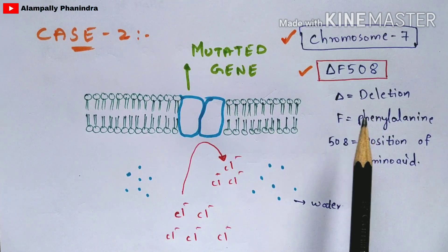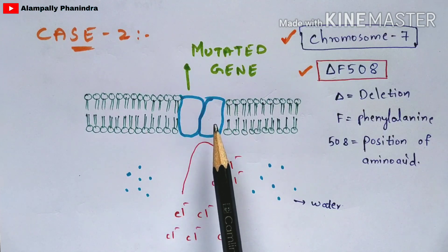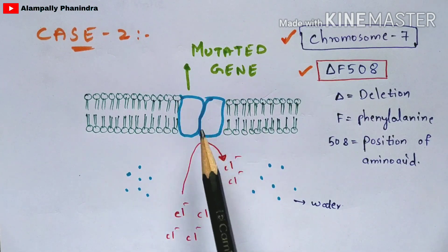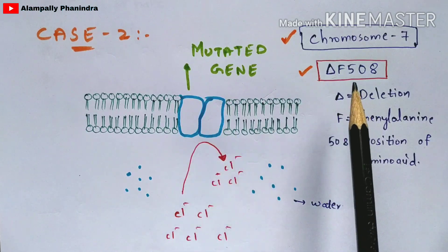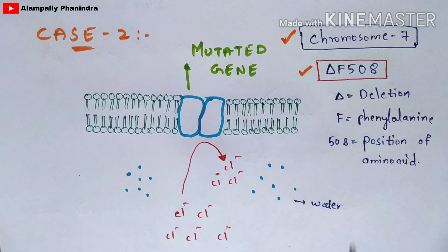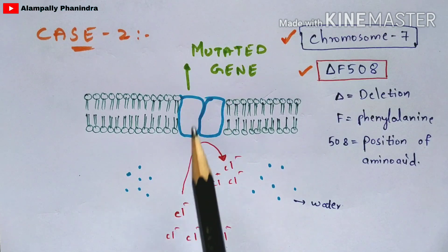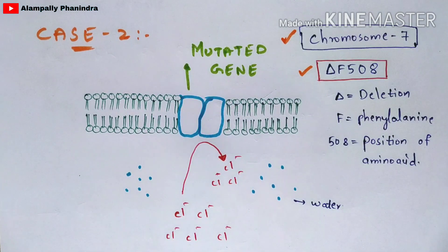Because of the Delta F508 mutation at chromosome 7, the CFTR protein gate closes. As a result, chloride ions in the intracellular region cannot enter the extracellular region and are reflected back. Water molecules also cannot pass to the extracellular region. Since neither chloride ions nor water molecules can enter the extracellular region, the formation of mucus does not occur, and the person is infected with cystic fibrosis disease.